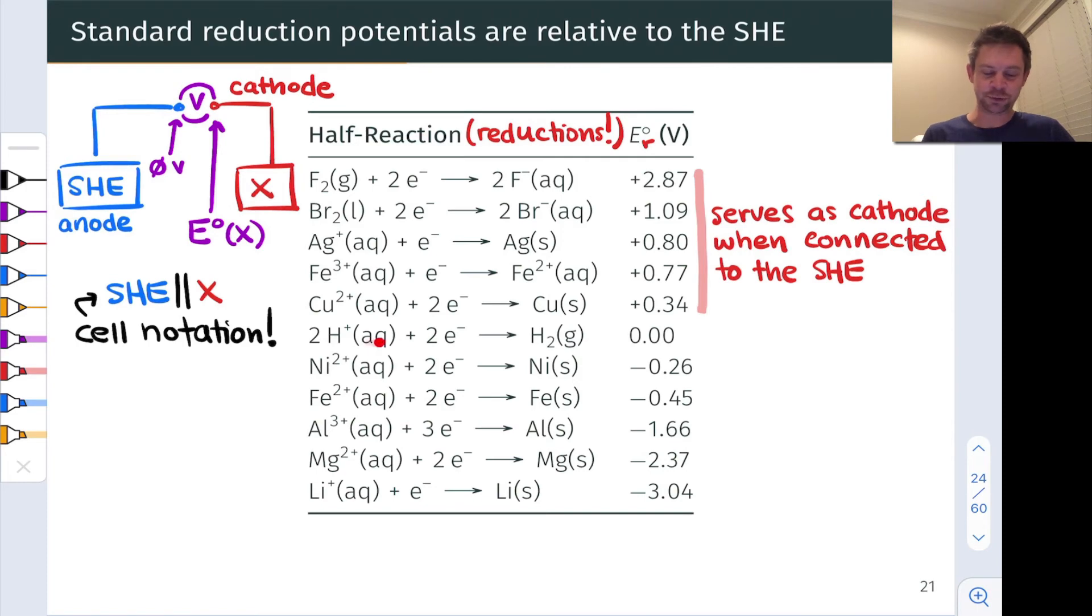When we connect the SHE to itself, there's no voltage there. That's an equilibrium situation with the same half cell on the left and on the right. So no current will flow. There's no potential difference at all.